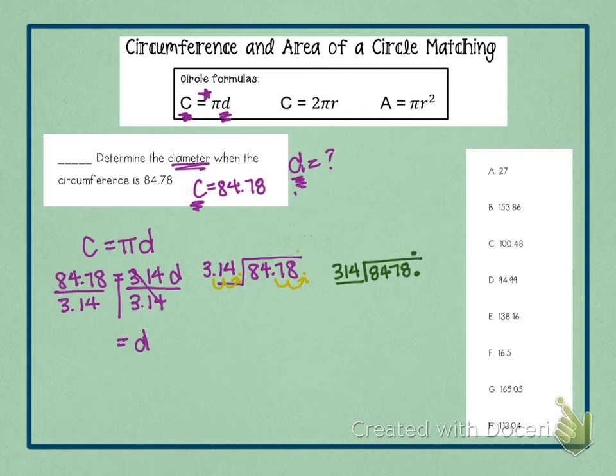So now we are determining how many times does 314 go into 847. And that is, so it goes into 8 zero times. It goes into 84 zero times. And then 847, hopefully we can tell that that is twice. Doubling 3.14, 2 times 314 is 628.